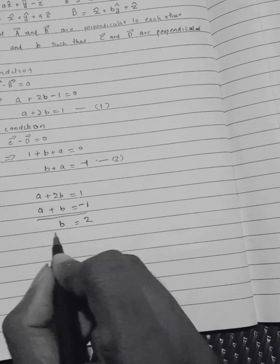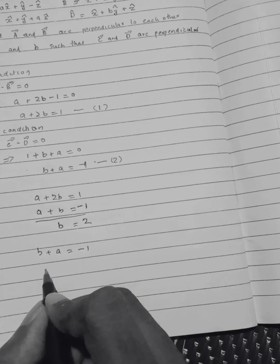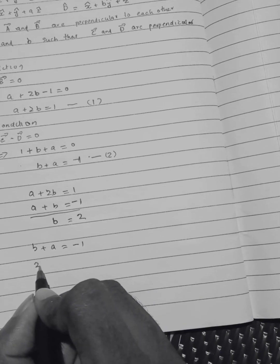B equals 2 when putting b plus 1 equal to b plus a equal to minus 1, putting b in that equation.